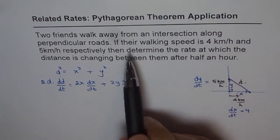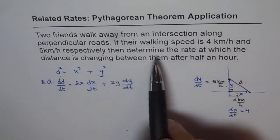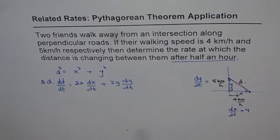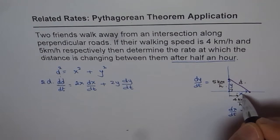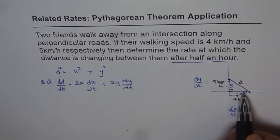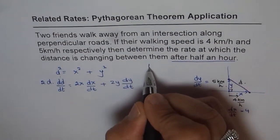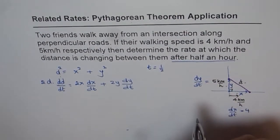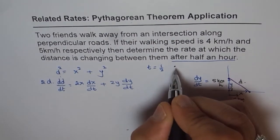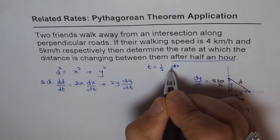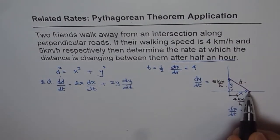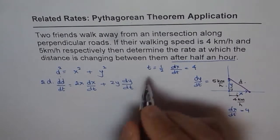When we say if they are walking at these speeds respectively, then determine the rate at which distance is changing between them after half an hour. That is critical. So in half an hour, how much distance will they cover? That is x and y. If the speed is 4, then along the x direction, what is x equals to? So time is half an hour and speed, let me write dx/dt, is given to us as 4. Then what is the distance traveled? Distance equals speed into time.